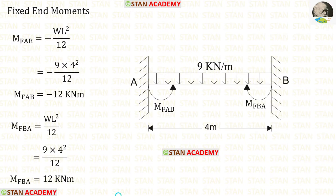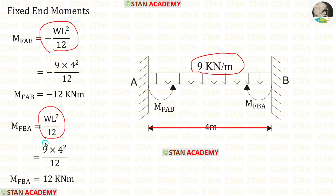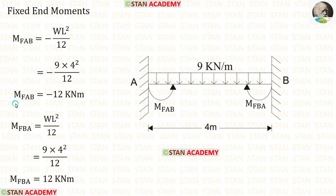Now let us find the fixed end moments. First let us find them in the span AB. In the span AB there is a UDL of 9 kN/m acting for the whole span. The formulas for finding the fixed end moments are −WL²/12 and +WL²/12. After applying the values inside the formulas we are getting M_AB and M_BA.